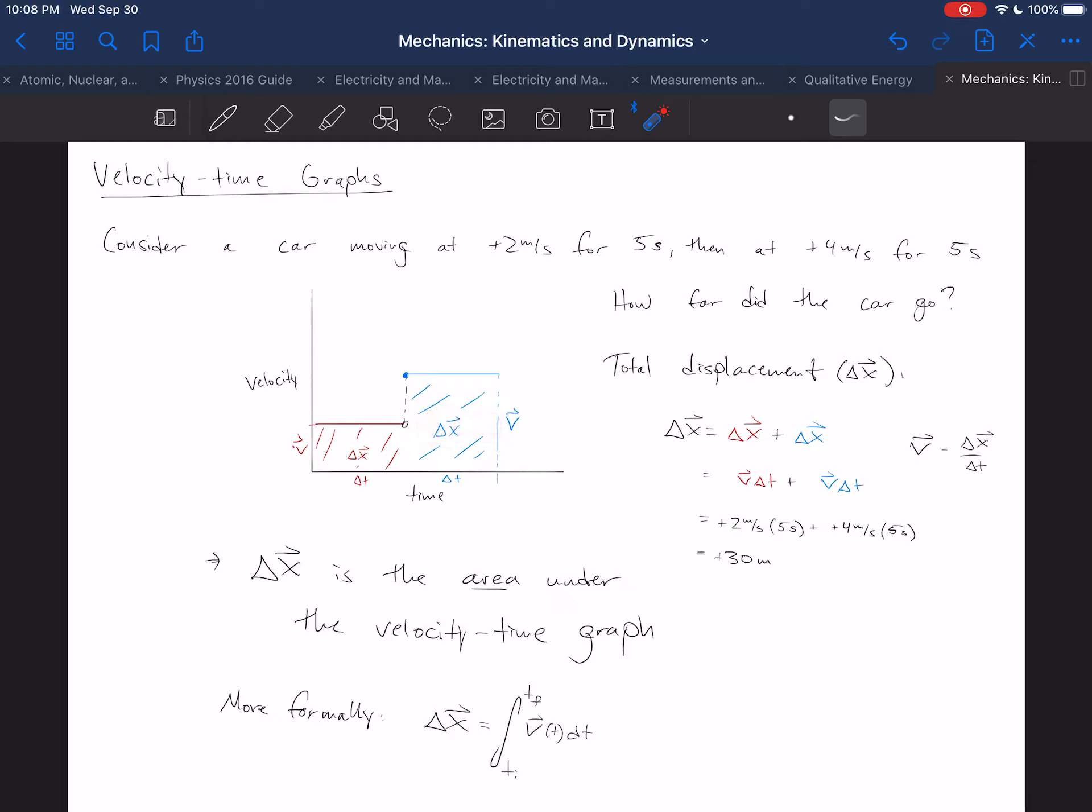Notice that if the car had been moving at negative 2 meters per second for 5 seconds, then the displacement in that first region of time, that first time interval, would have been negative 10 meters. And that would have been shown on the graph because the line would have been below the t axis here. And so this area is what would have been calculated, the area between the line and the graph, and that area would have been negative.